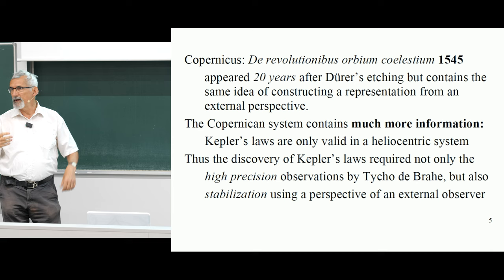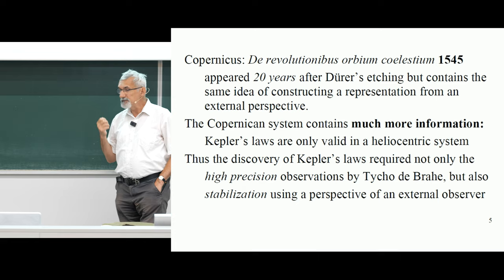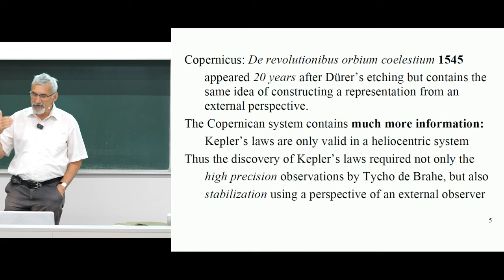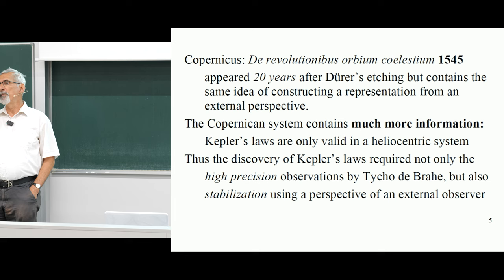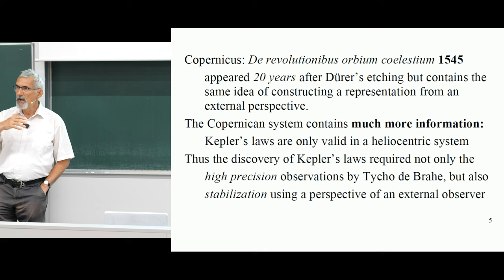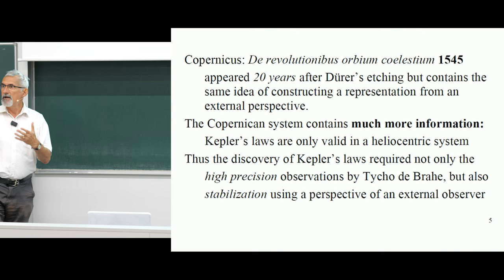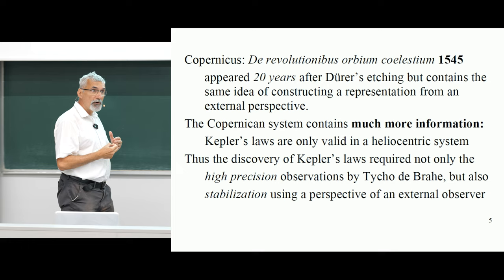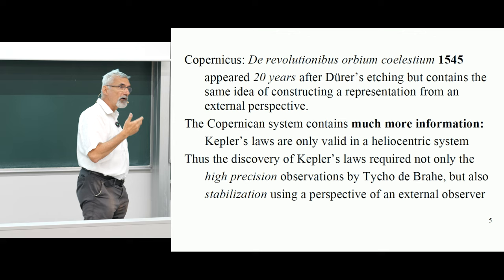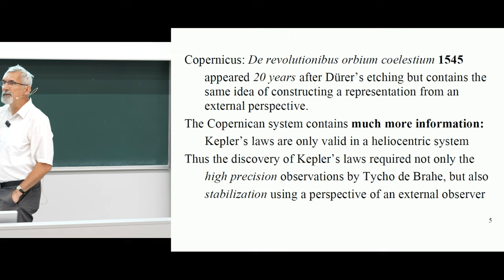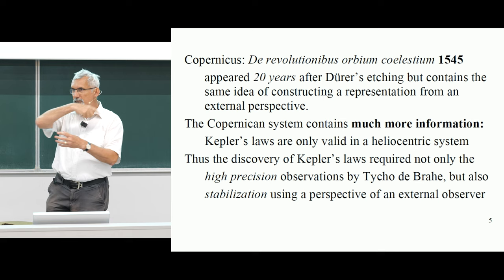The Copernican system contains much more information. Kepler's three laws are valid only in the heliocentric system — in a geocentric system, the planets do not move on ellipses, the sectorial velocity is not constant, etc. So just like in the painting, by fixing the epistemic contact — creating a stable viewpoint from which we construct the representation — we get much richer information. Kepler didn't have more or better data; he had Tycho de Brahe's data, only slightly better than previous. The big breakthrough was not new data, but that he was able to stabilize them, to abstract away the motion of the Earth and construct the picture as it appeared from a stable Sun.